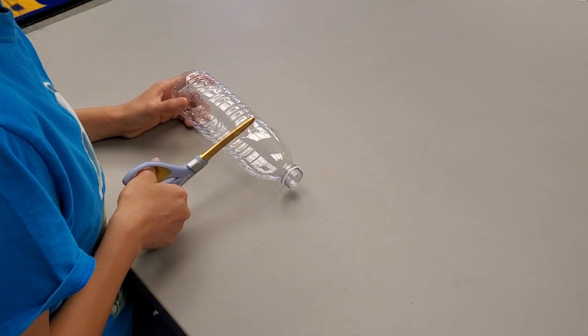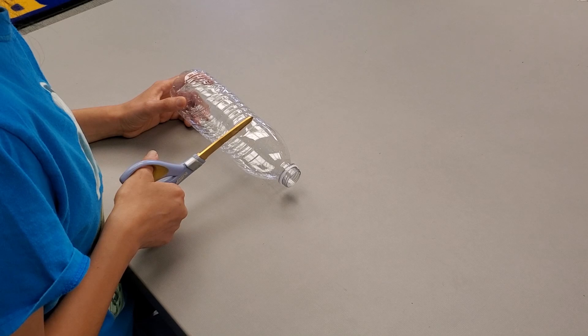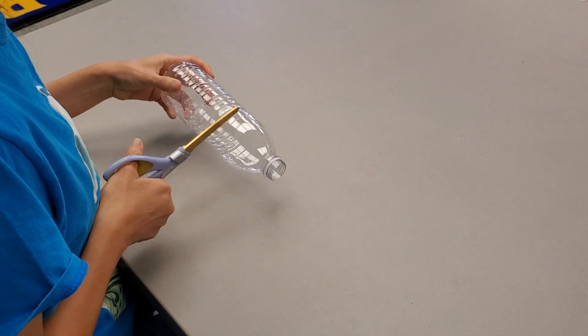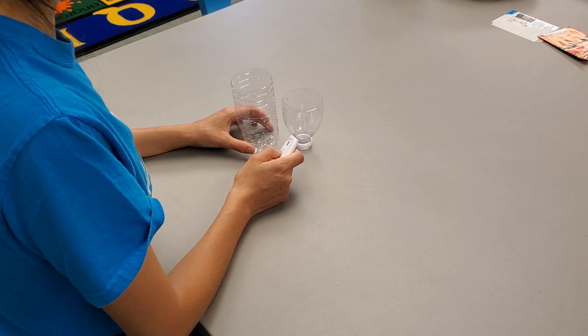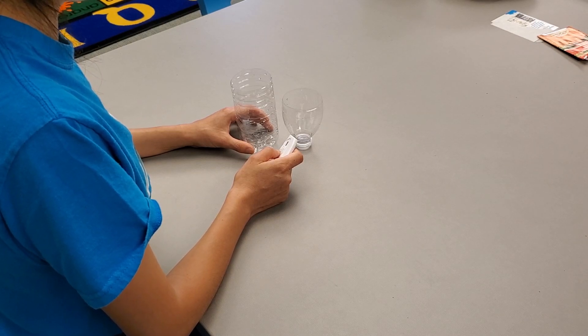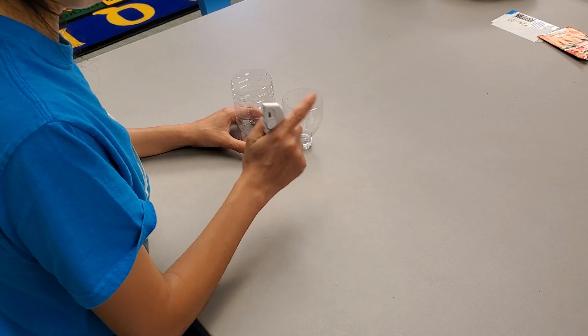Now that you have the hole, you can insert your scissors and start cutting. We need to finish cutting the rest of the water bottle to about the same height as the funnel.